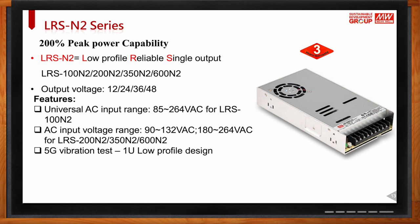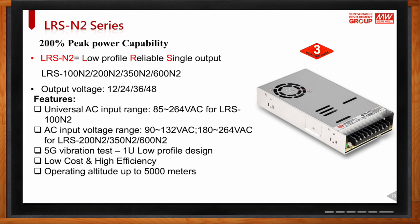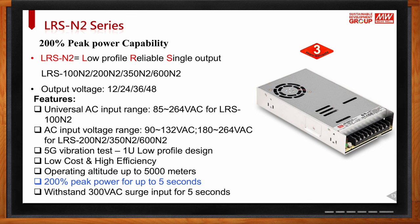For the LRS-100W, the AC input is universal. For the LRS-200W, 350W, and 600W, you need to set a switch to identify the input voltage — either 90V to 132V or 180V to 264V. The LRS also passes 5G vibration testing, has a low-profile one-U height, high efficiency, and can operate up to 5000 meters altitude. It withstands 300V surge protection and delivers 200% peak power capability for the first five seconds.